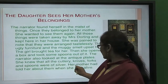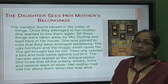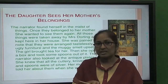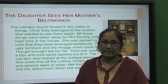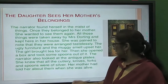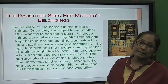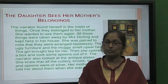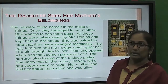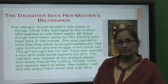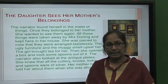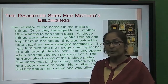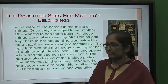She knew that all the cutlery — knives and silver items — were made in a particular fashion. Her mother had told her about them when she was alive. The narrator had not been sure that the cutlery used for dinner or breakfast was made of silver, but when she was asked to polish them, she realized that it was indeed silver.